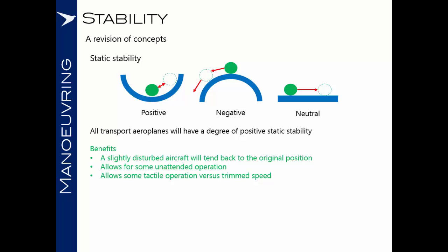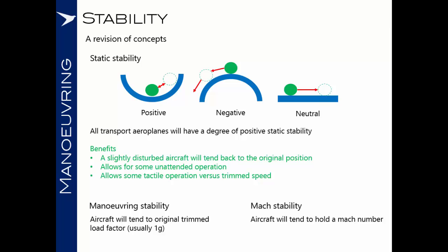There are two other types of stability to consider. The first is manoeuvring stability — the aircraft's tendency to return to its original trimmed load factor, which normally will be 1G. The second is Mach stability: the tendency of an aircraft to hold a given Mach number, because if it speeds up, drag will increase and the aircraft will tend to slow back down to its original Mach number.